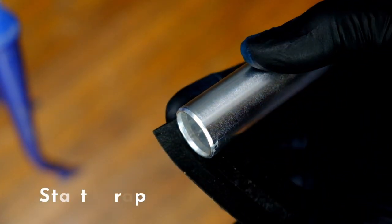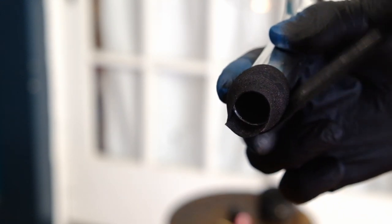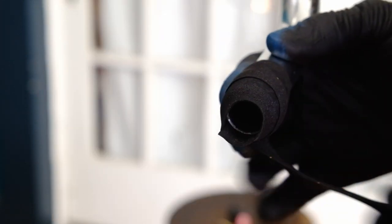You're gonna start your wrap by placing the end of the tape on the bottom side of the end of the bars. Leave about a third of the tape hanging over the end so you can tuck it in with a plug later.